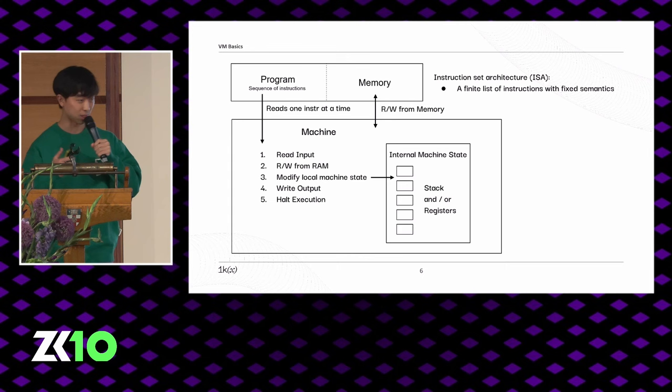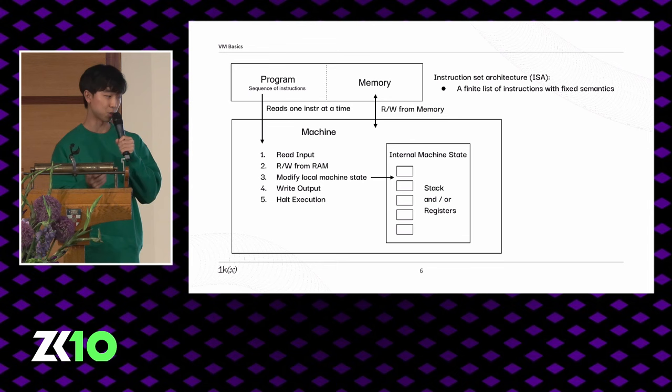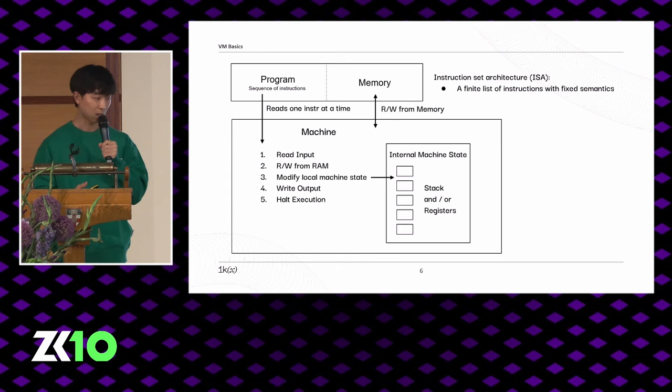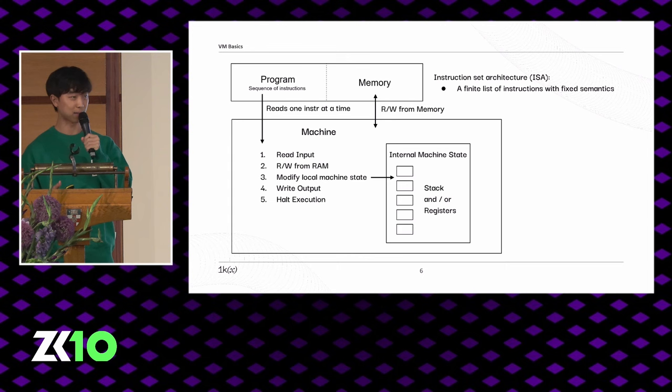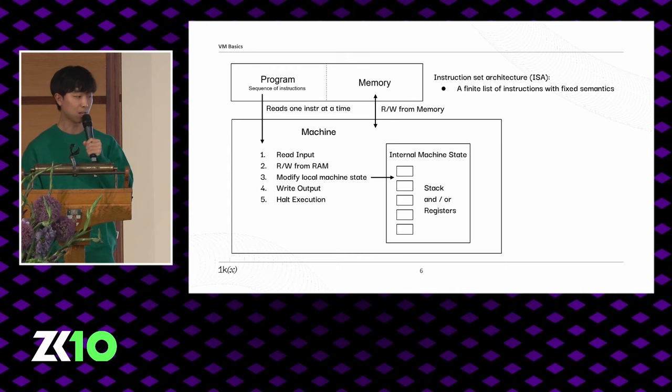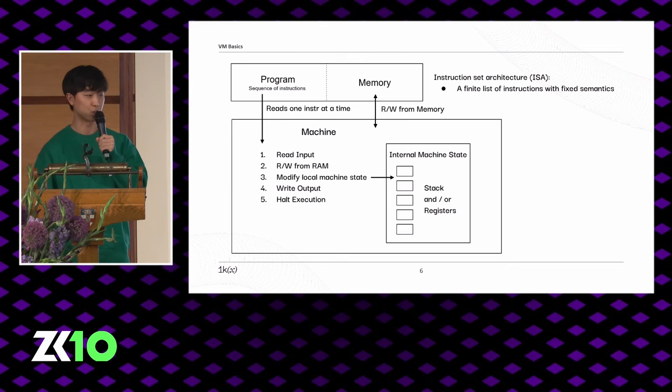In the context of a ZKVM, a VM is an abstraction of what a machine is. It's specified by its memory, its instruction set architecture, and its internal machine state. The ISA is basically a finite list of instructions with fixed semantics — think the EVM opcodes, RISC-V, WASM. A program is a sequence of such instructions, and the machine reads through each instruction, doing things like reading and writing from memory or changing its internal machine state.